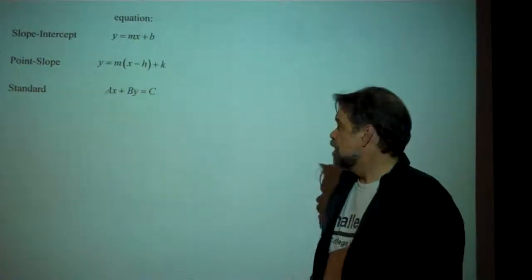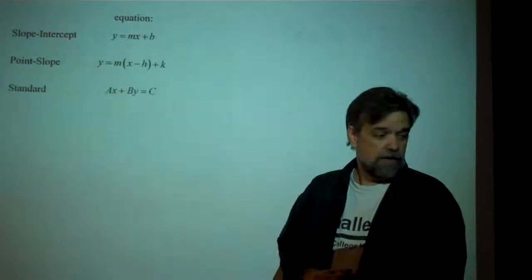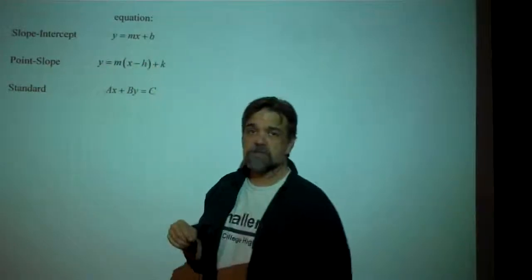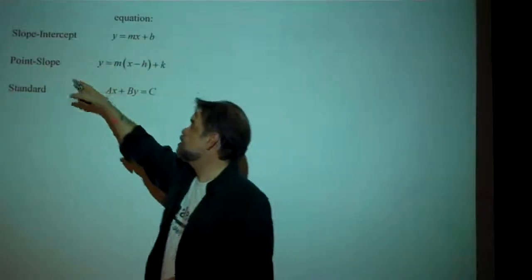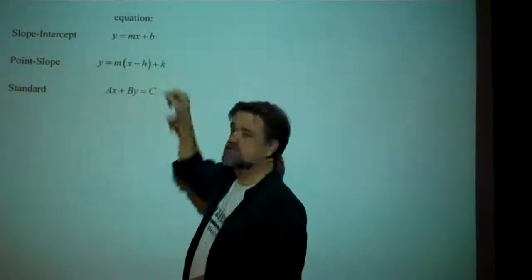So far, we've looked at two forms for writing a linear equation. We've seen the slope-intercept form, y equals mx plus b, and we've seen the point-slope form, y equals m times x minus h plus k.